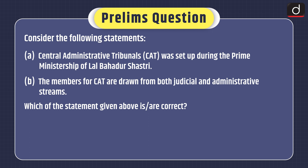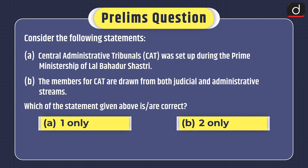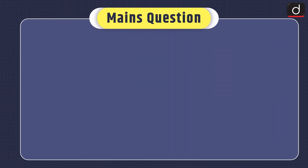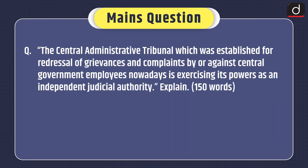Now it's time for practice questions. Prelims question — Consider the following statements: 1. Central Administrative Tribunal or CAT was set up during the prime ministership of Lal Bahadur Shastri. 2. The members of CAT are drawn from both judicial and administrative streams. Which of the statements given above is or are correct? (1 only, 2 only, both 1 and 2, or neither 1 nor 2.) Mains question: The Central Administrative Tribunal, which was established for redressal of grievances and complaints by or against central government employees, nowadays is exercising its powers as an independent judicial authority. Explain.